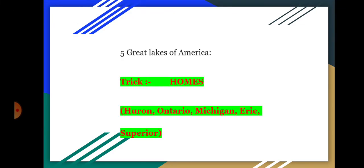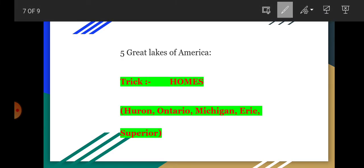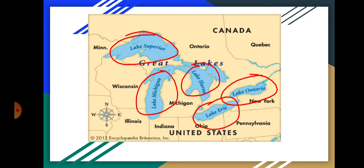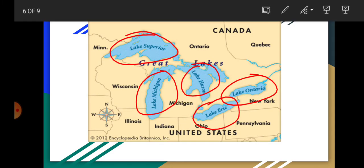These five lakes are called the Five Great Lakes. The trick is HOMES: H for Huron, O for Ontario, M for Michigan, E for Erie, and S for Superior. They're not in geographic order, but if you can develop better mnemonics, please comment in the comment section.